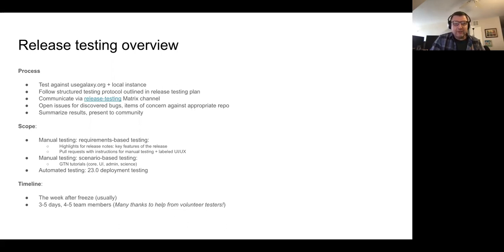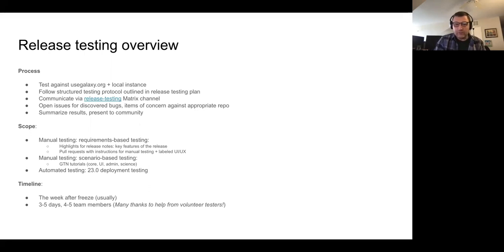Then we have the tutorials — GTN tutorials — which we use as scenario-based testing: sets of paths a user might take when using Galaxy in the wild. These are the paths we take, and the paths we try to leave creatively trying to break Galaxy. The timeline is usually one week, right after freezing. We have three to five team members and it takes about a week — five days. A special thanks goes to volunteer testers, thank you Wolfgang. Your help was most appreciated.